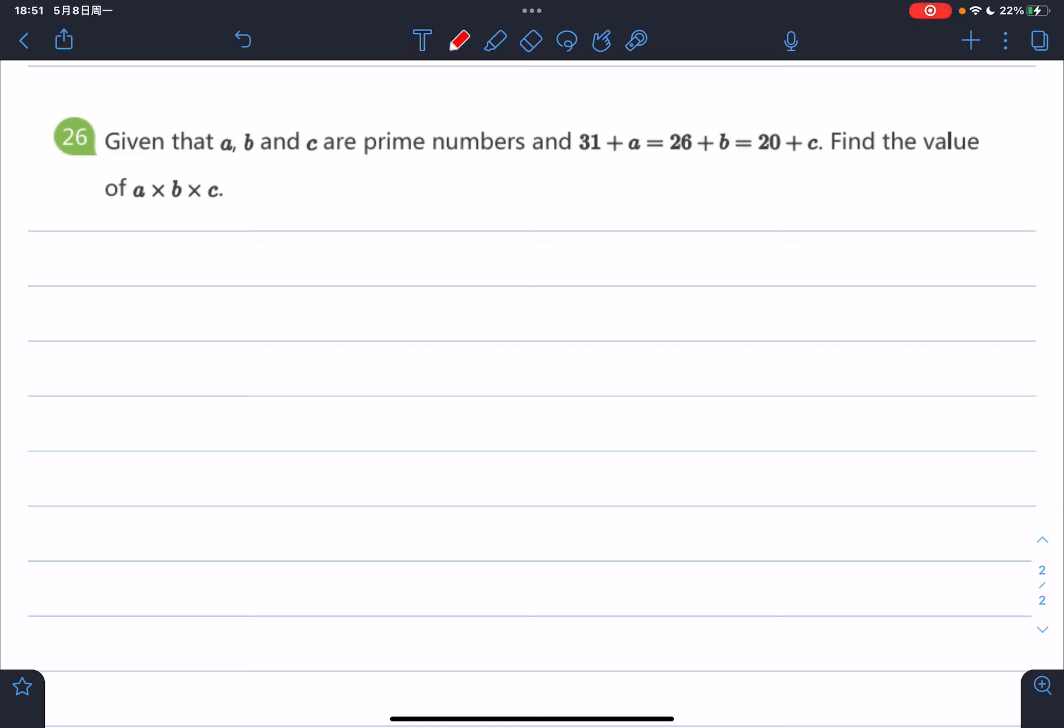Now, basic question number 26. Given that a, b, and c are prime numbers, and 31 + a = 26 + b = 20 + c, find the value of a × b × c.